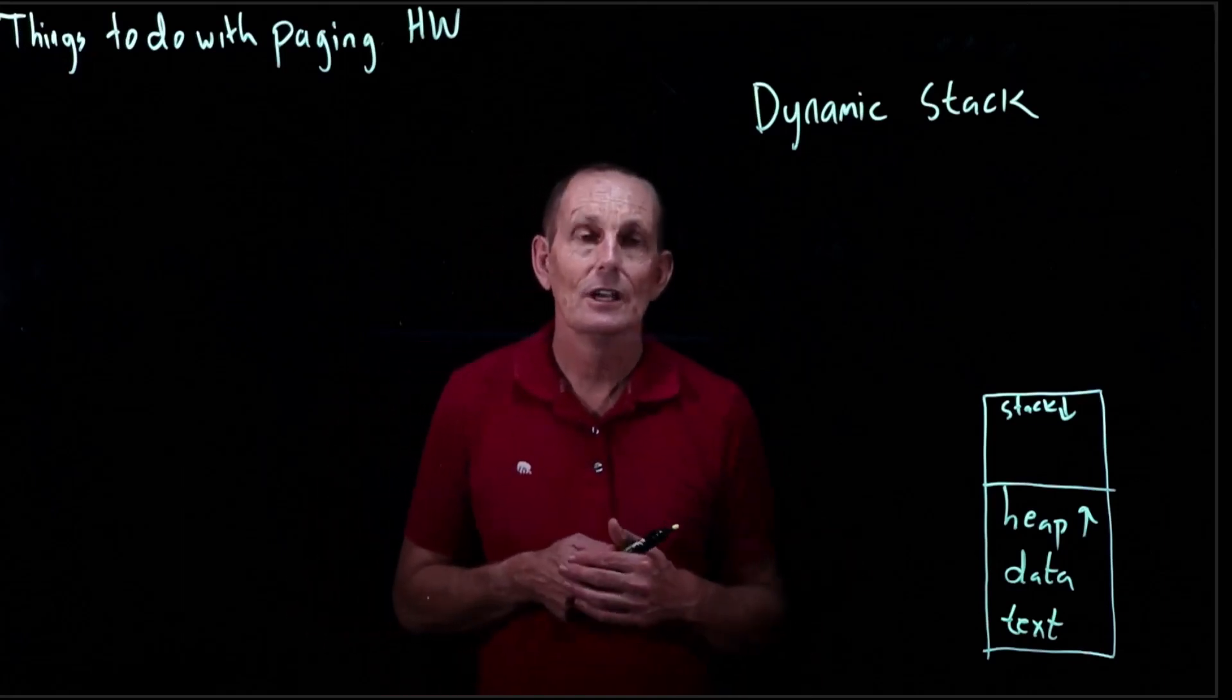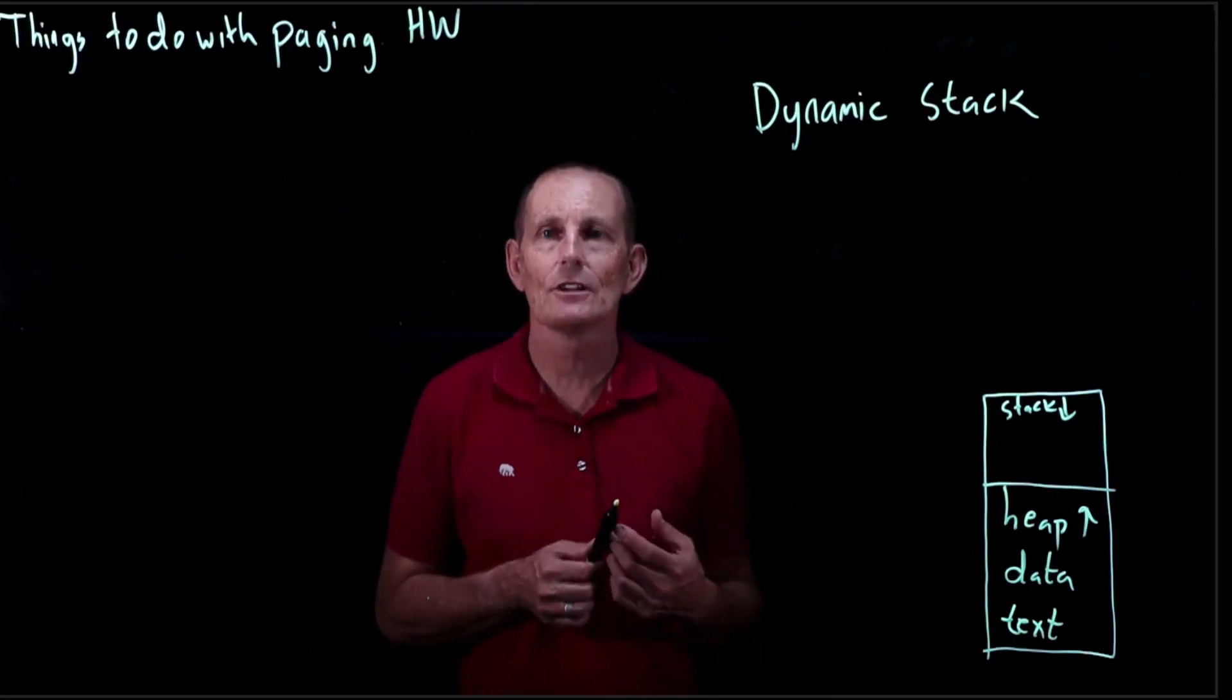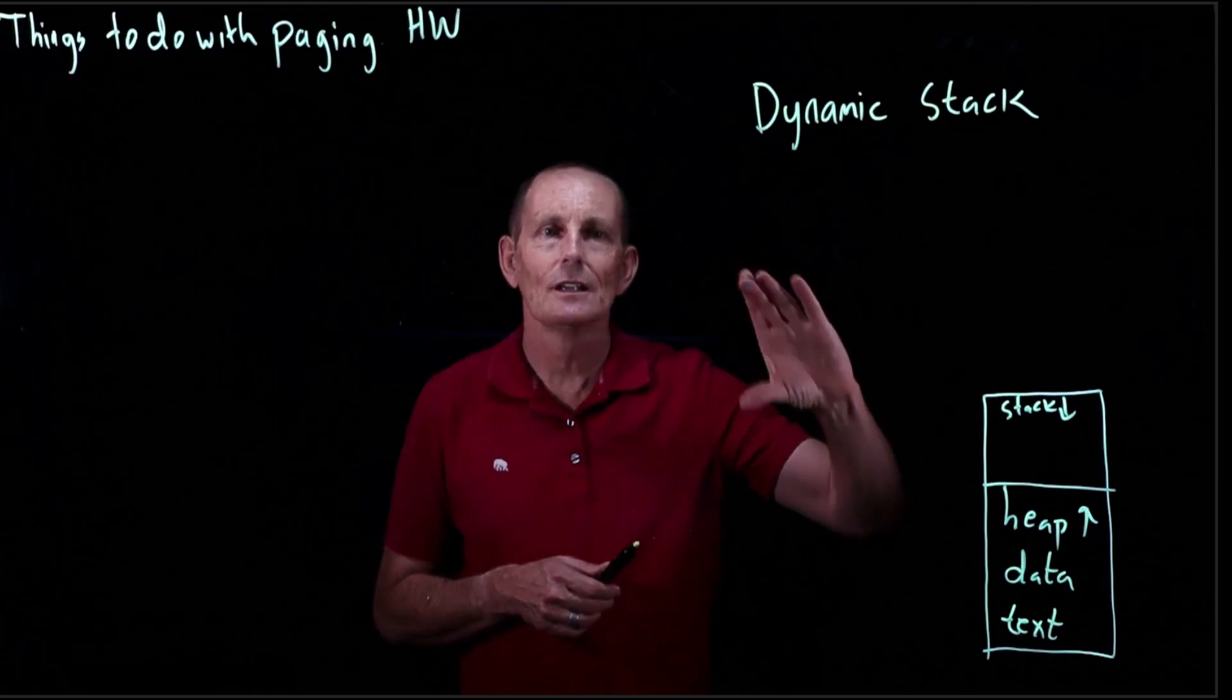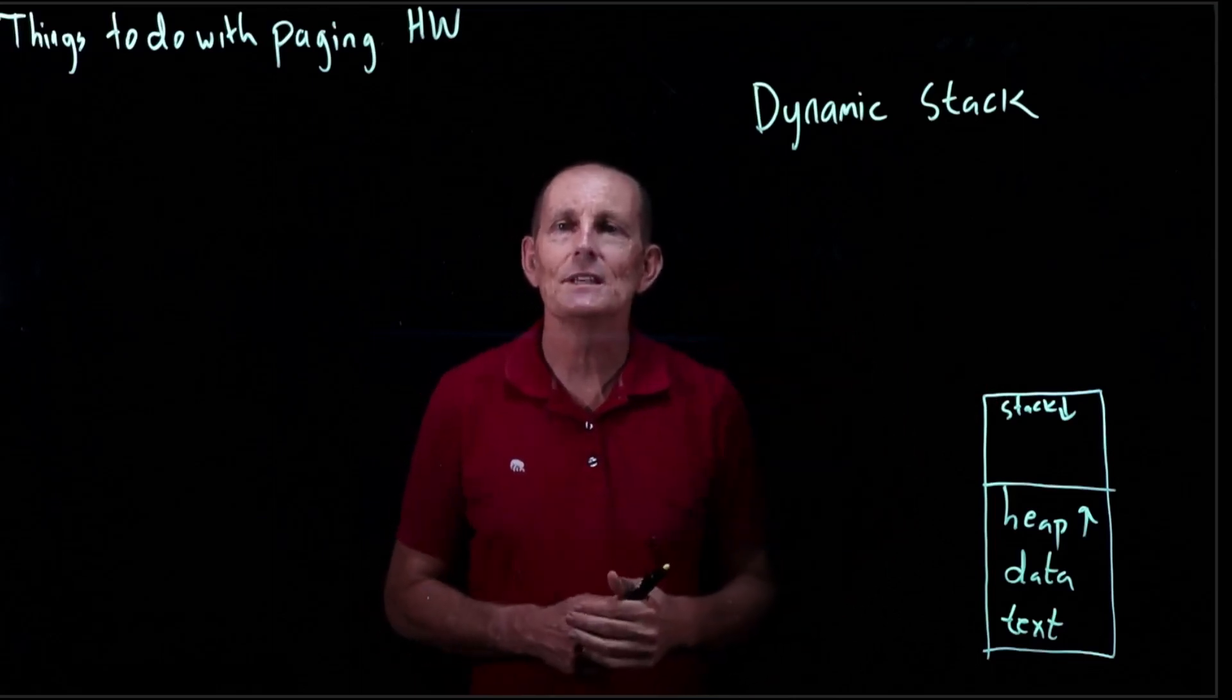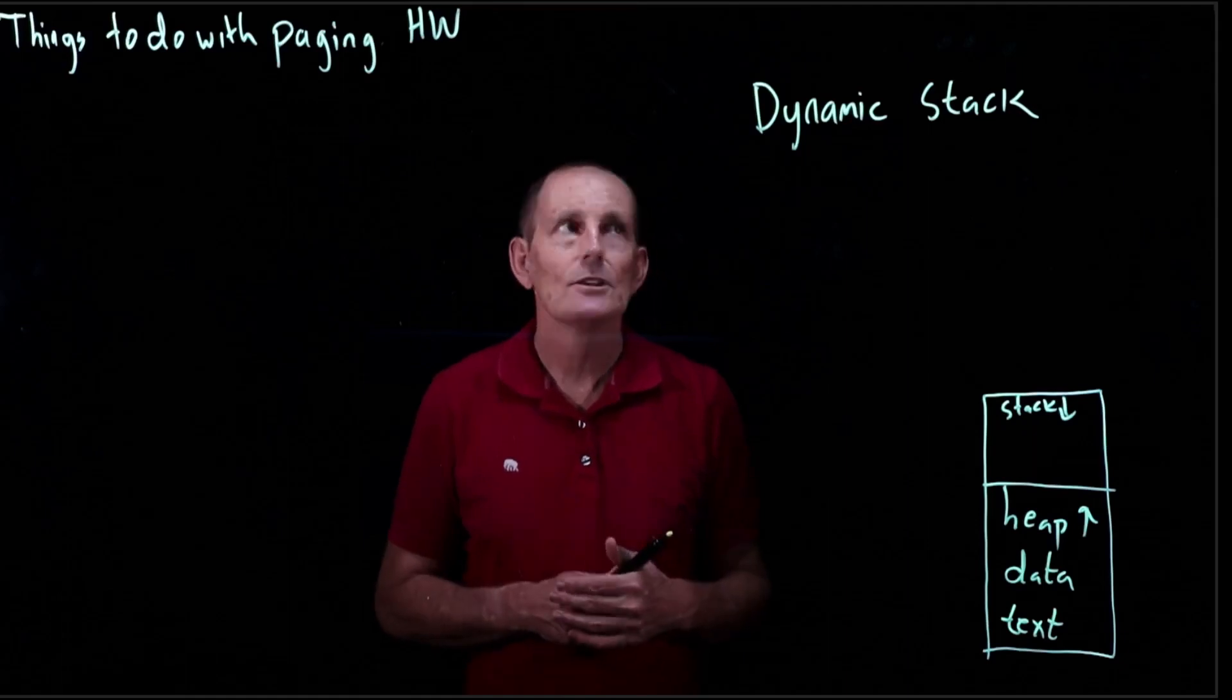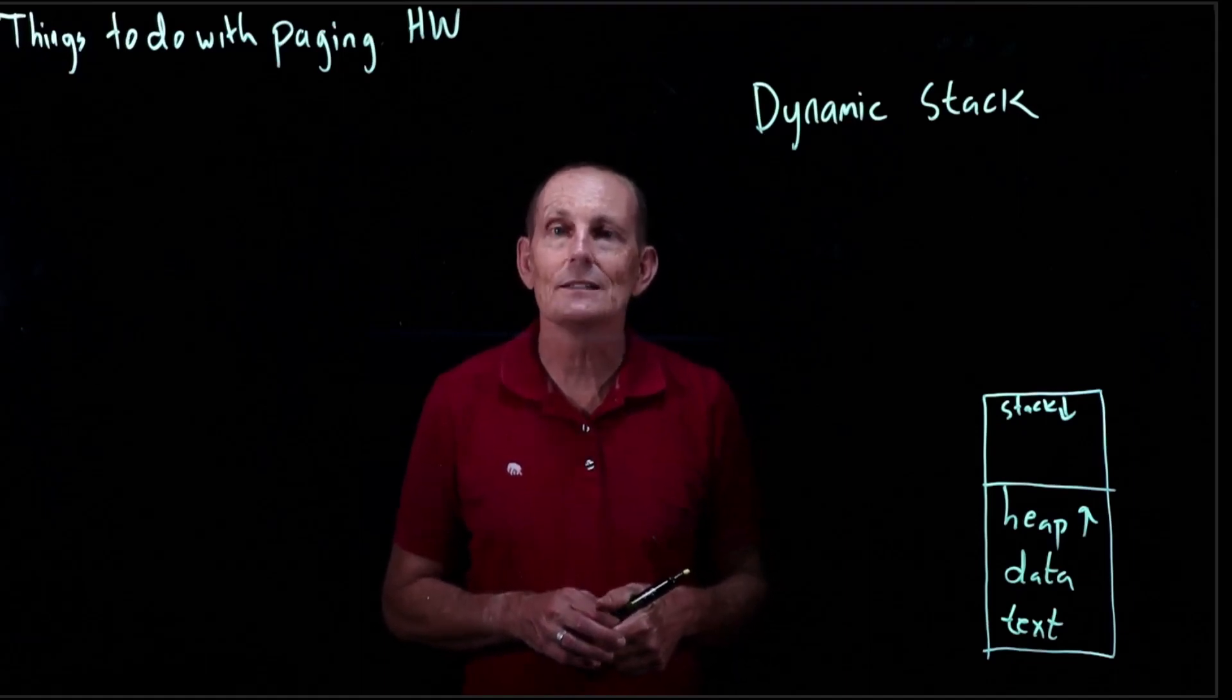How do we tell which is which? And maybe one process might use a small amount of stack in one particular invocation and a large amount of stack in another. Perhaps it has a heavily recursive routine that gets called many, many, many frames deep, but only sometimes. So the idea is rather than trying to guess what the process is needed as far as stack, let's just wait and see.